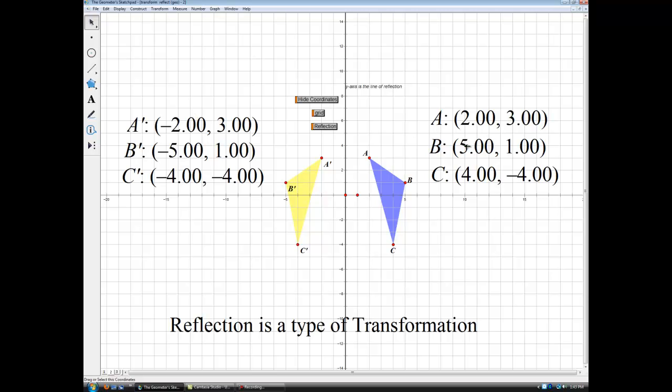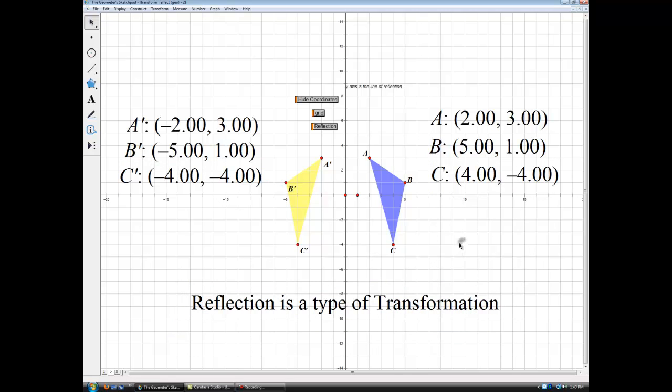That should make sense. Same with B and B prime. Same with C and C prime. The y value doesn't change, but the x becomes the opposite. All right. And remember this is a type of transformation, it's a reflection, needing a line of reflection. And the last one we're looking at is a little more specific case.